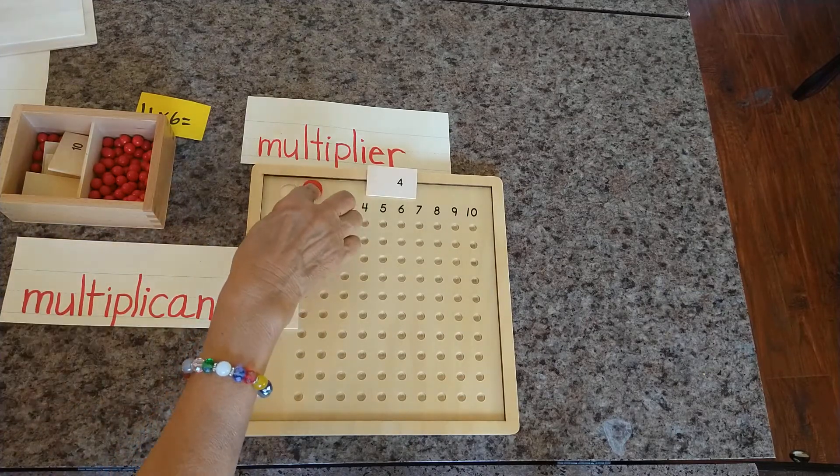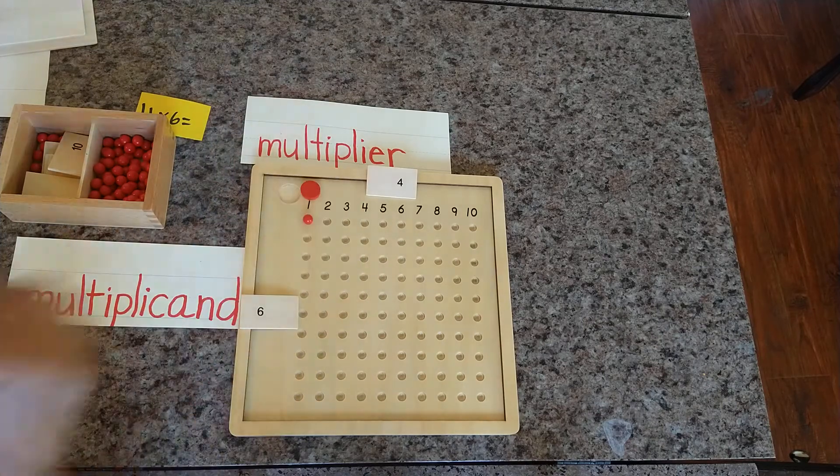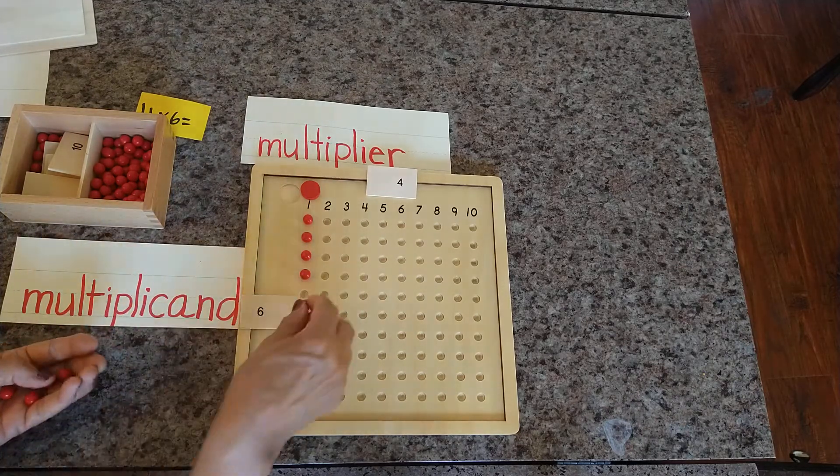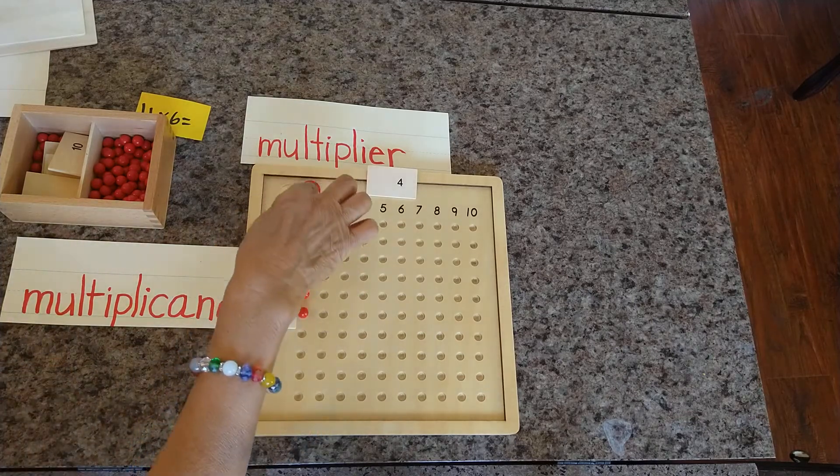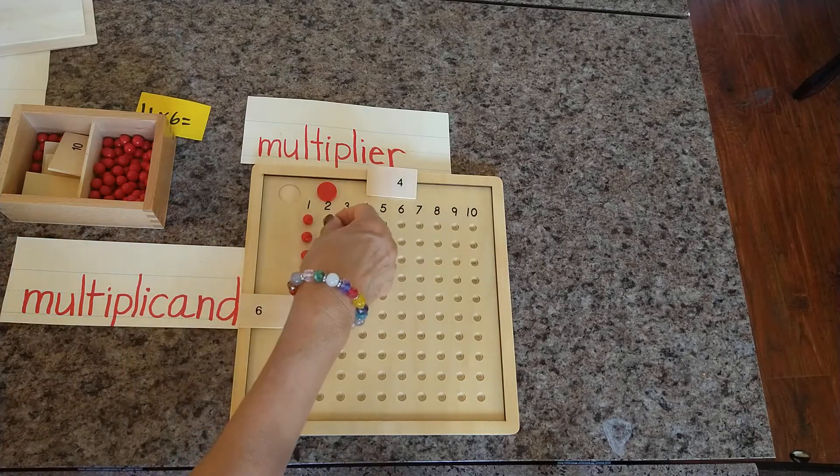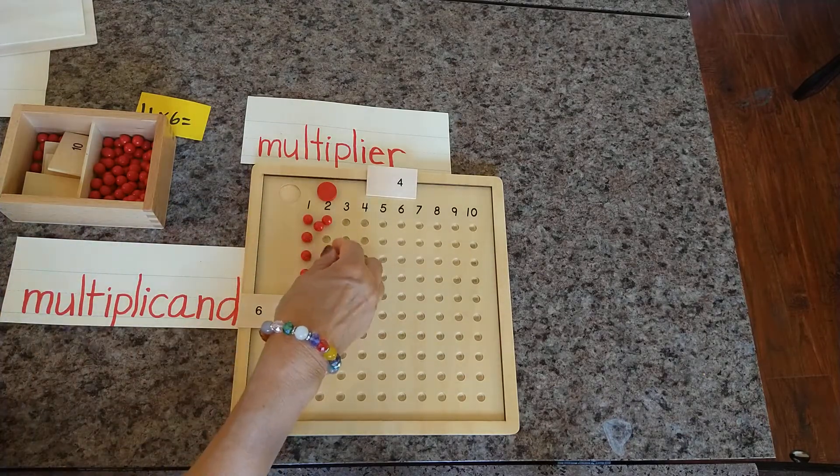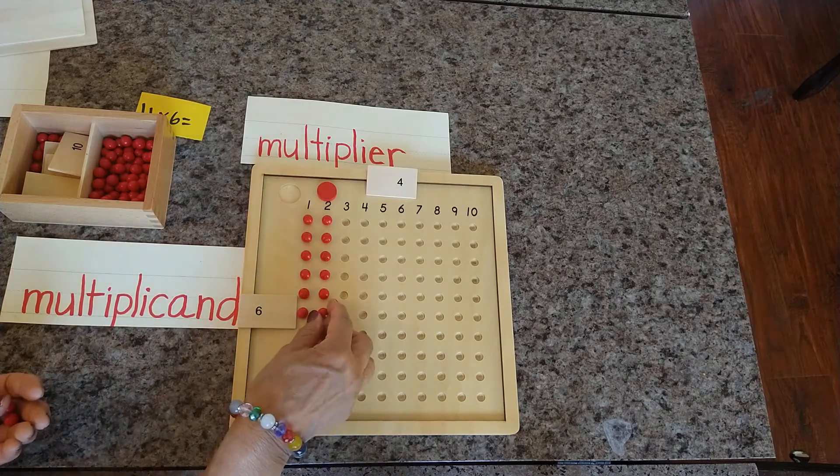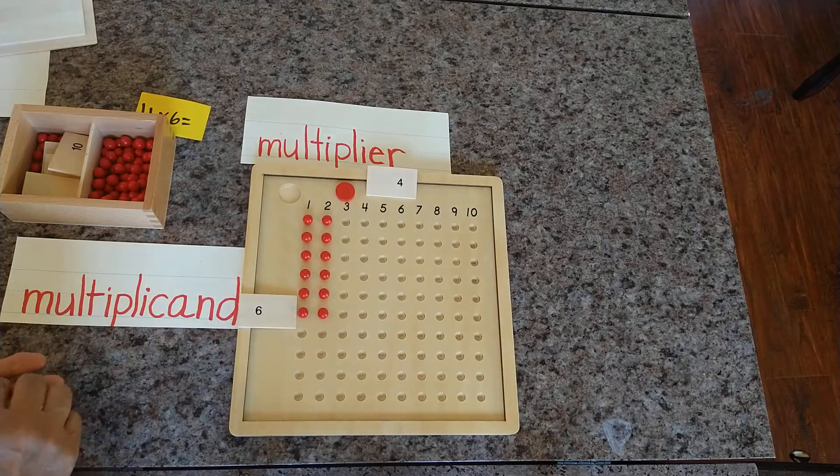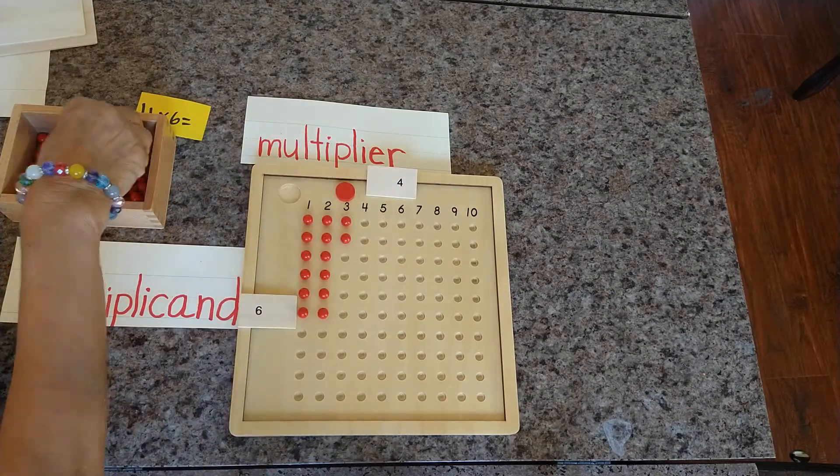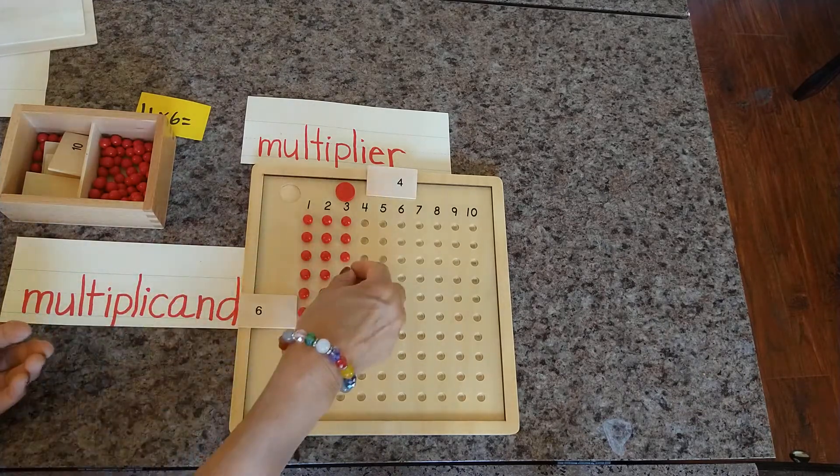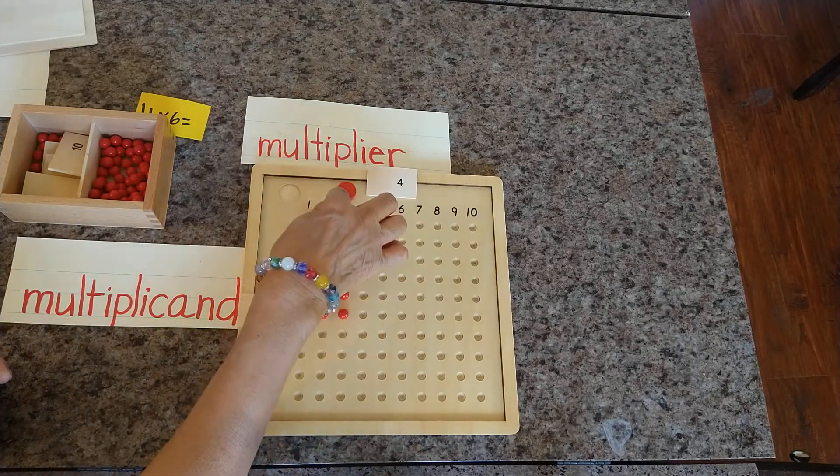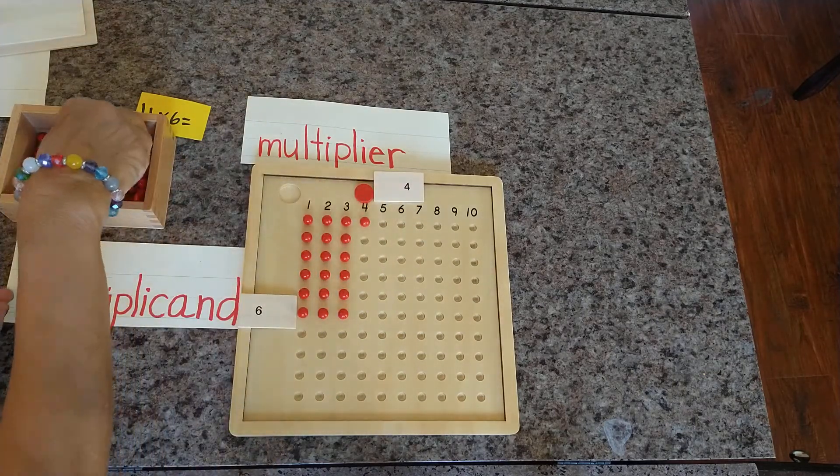1, 2, 3, 4, 5, and 6. 1 times 6. 1, 2, 3, 4, 5, 6. 2 times 6. 1, 2, 3, 4, 5, 6. 3 times 6.